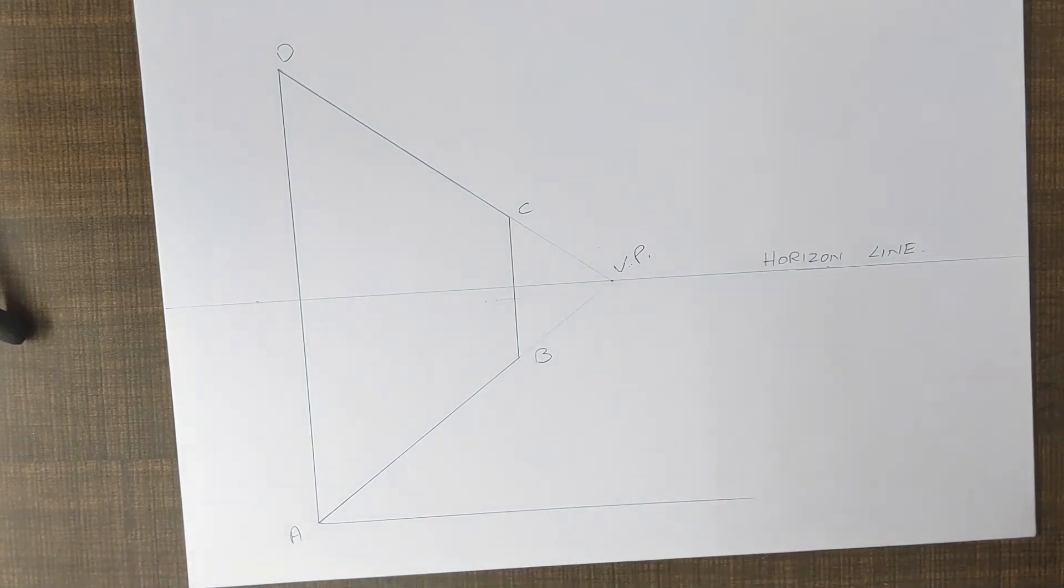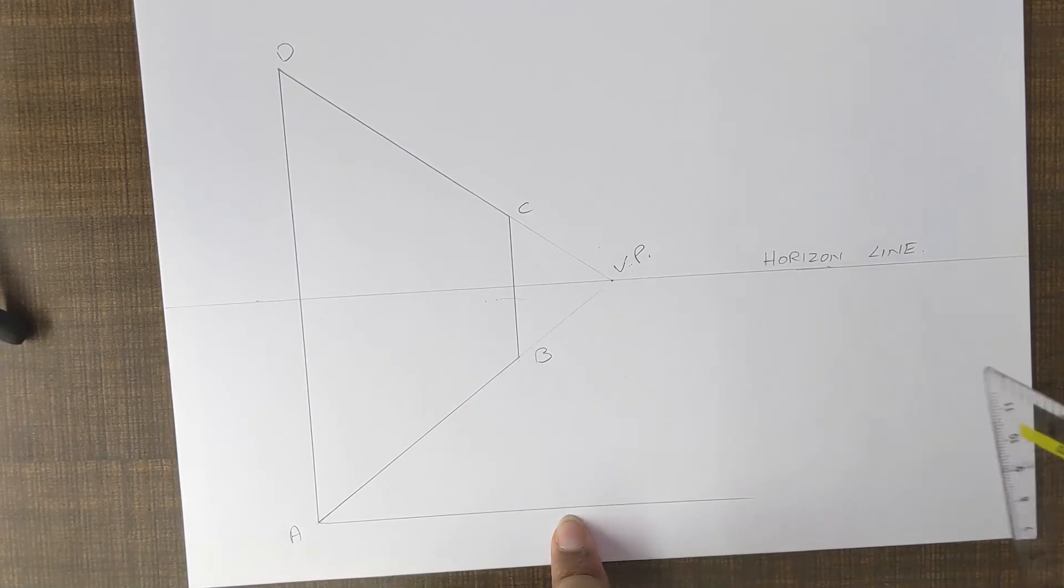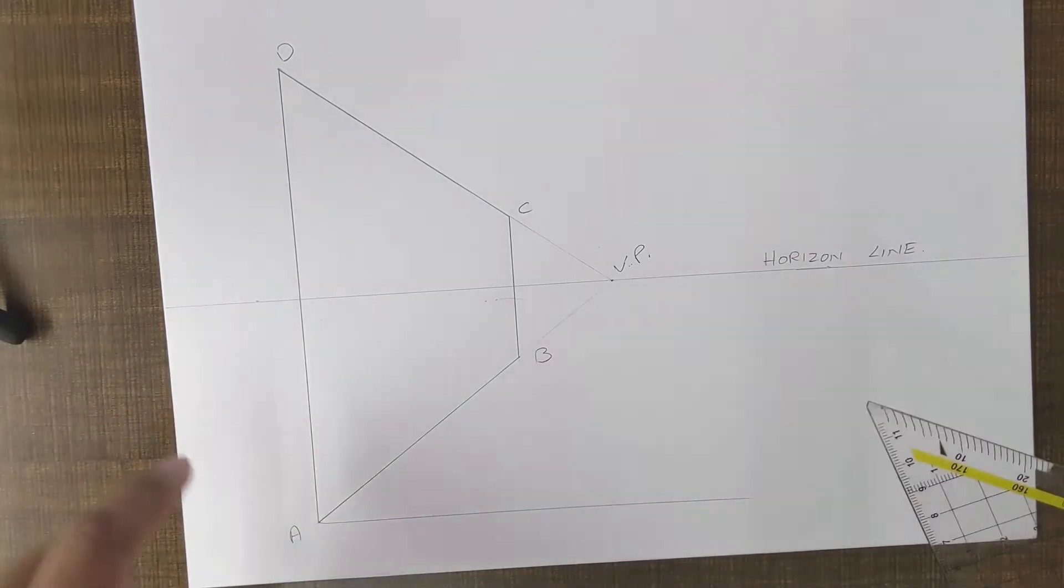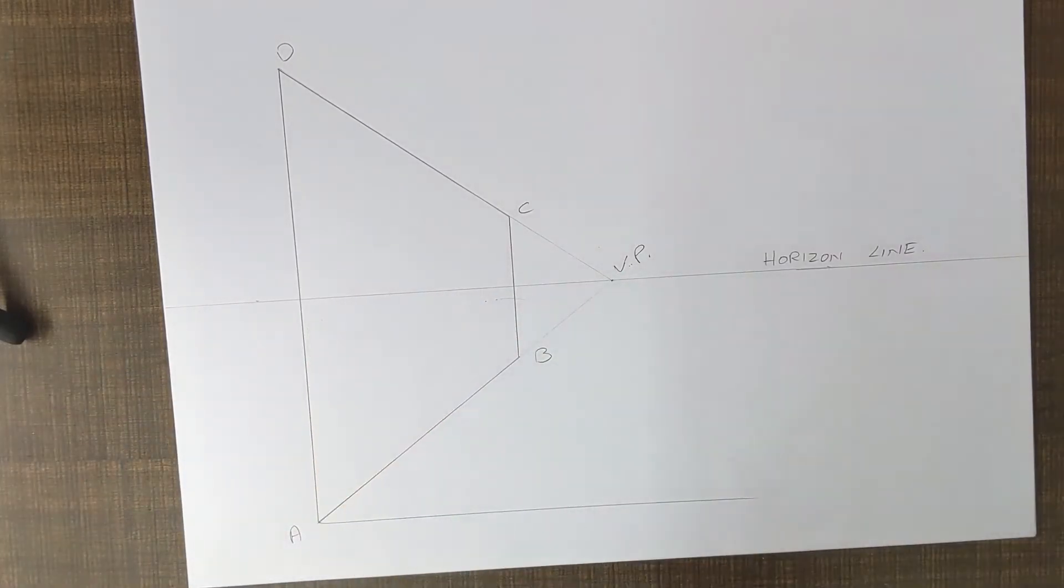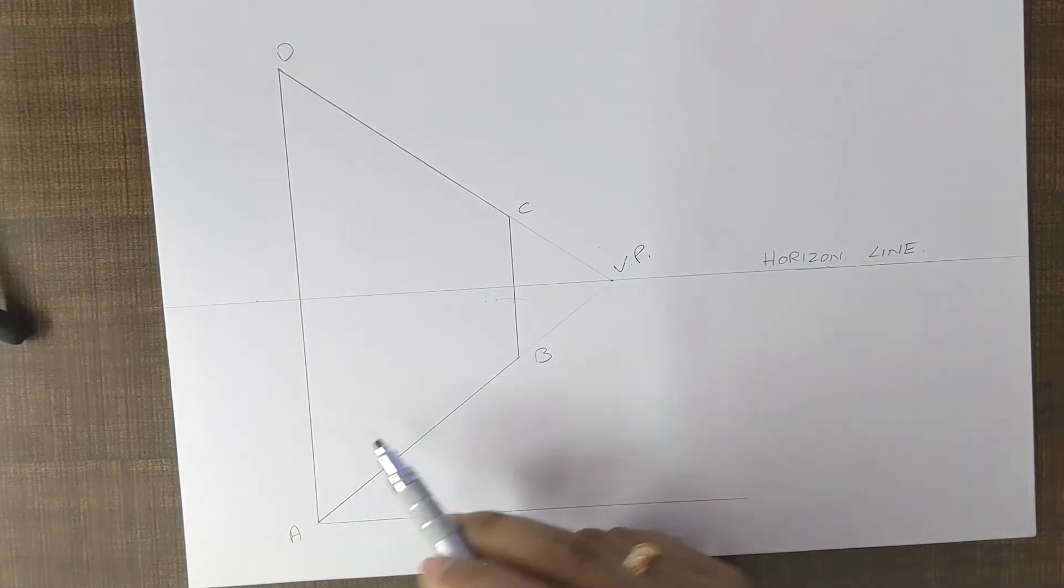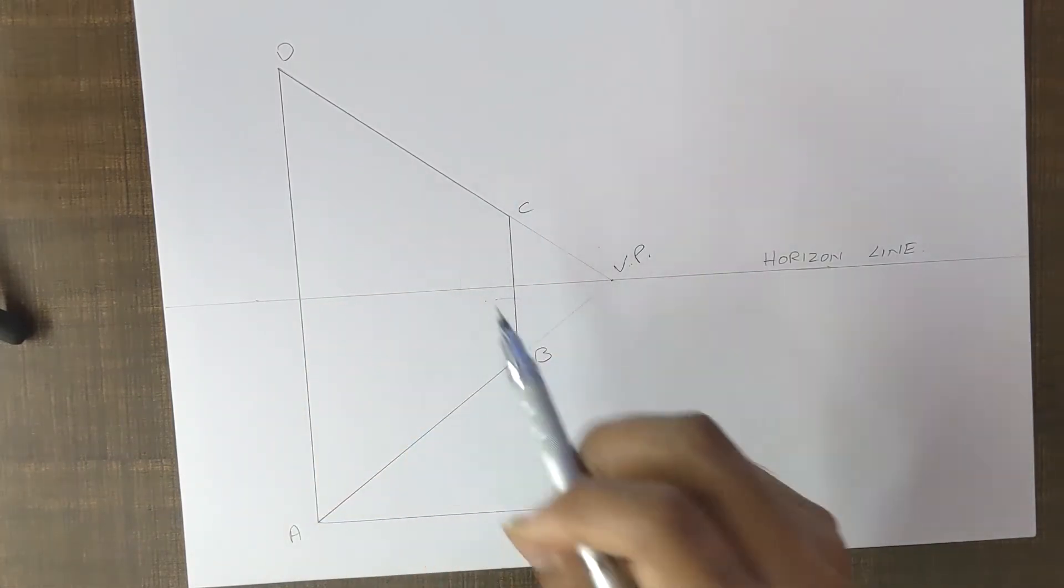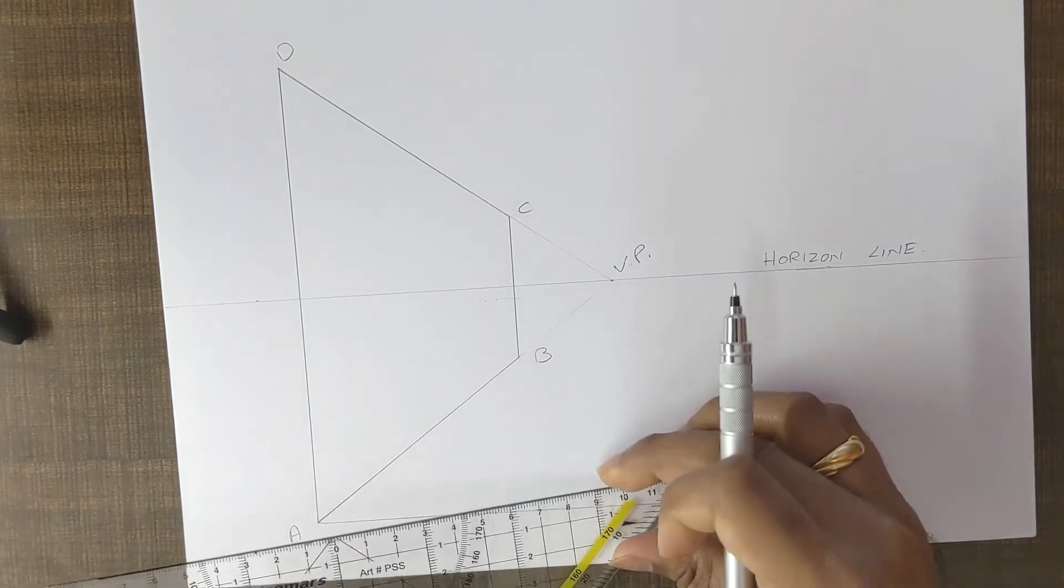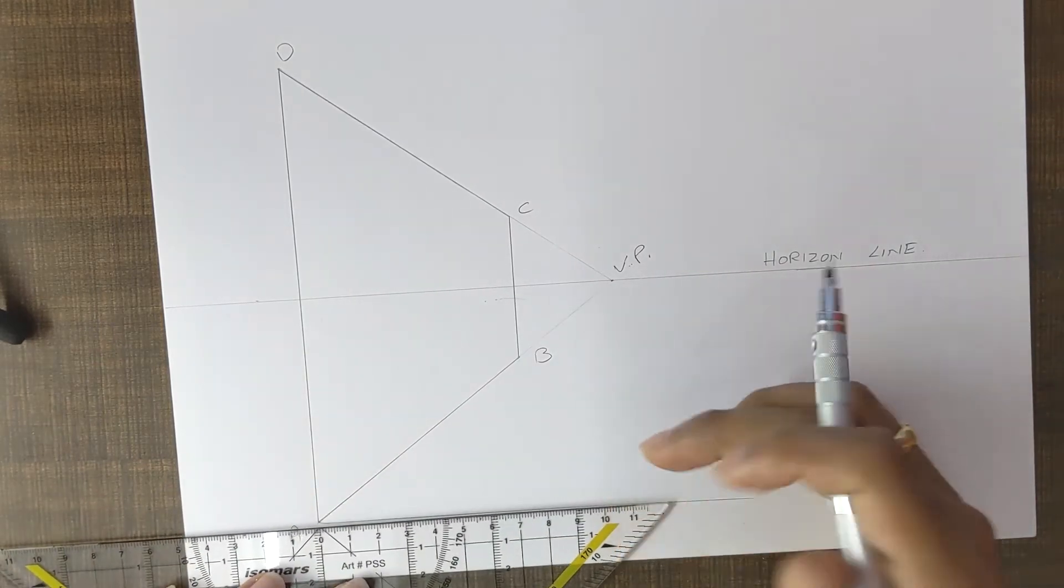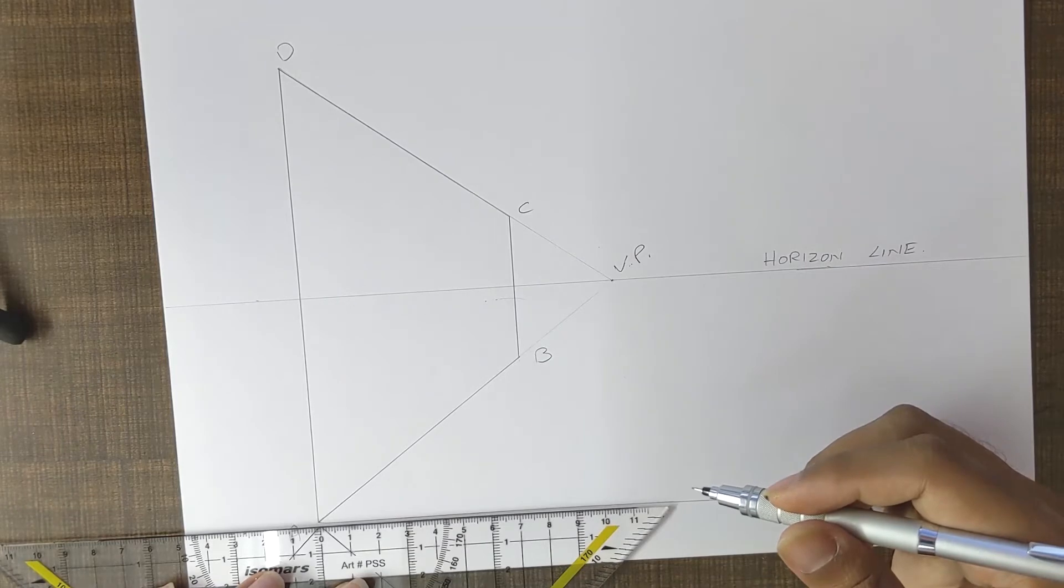Once you have your horizontal line, divide this line into the number of segments that you want in this plane. So let's say that I want five segments in this plane. I'll just go ahead and divide this horizontal line into five equal segments.